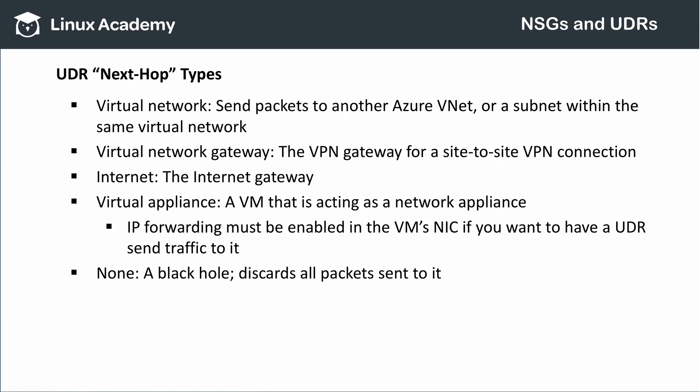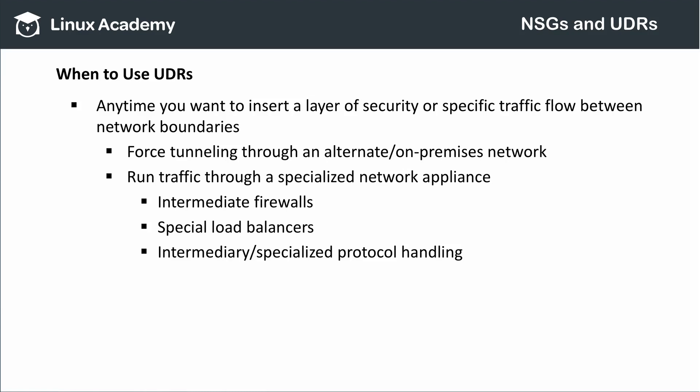An example of the black hole might be a VM hosting software that continuously probes against some external resource, such as an auto-suggest service, which you can't shut off from within the VM itself. User-defined routes are appropriate any time you want to insert a layer of security between network boundaries or need to direct traffic differently across a network boundary. For example, you may want to force your hybrid virtual network to route all traffic through your on-premises network so that both on-prem and Azure resources share the same outbound IP address and firewall rules, or install an intermediary network appliance such as a firewall between network boundaries, or accommodate a load balancing need more sophisticated than Azure's built-in rules, or translate a specialized protocol via a middleman. All of those ends can be accommodated with user-defined routes.